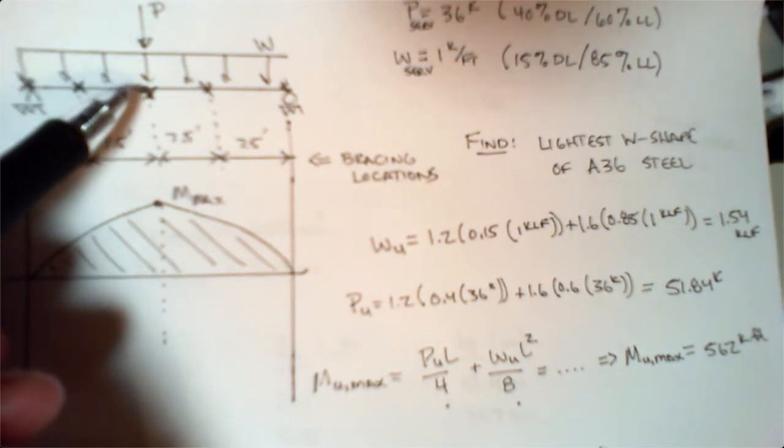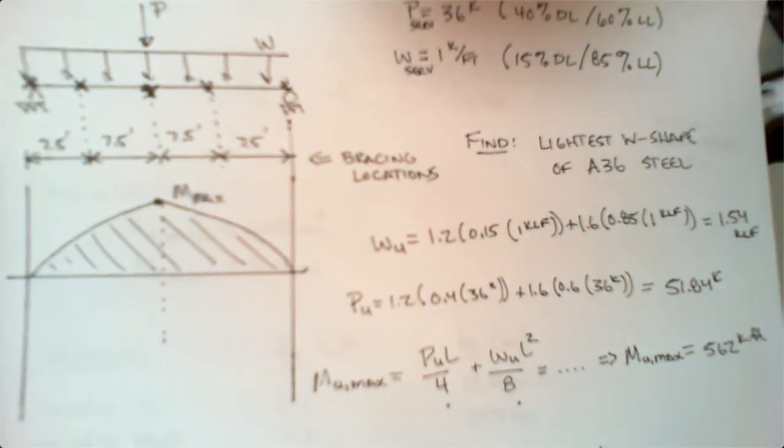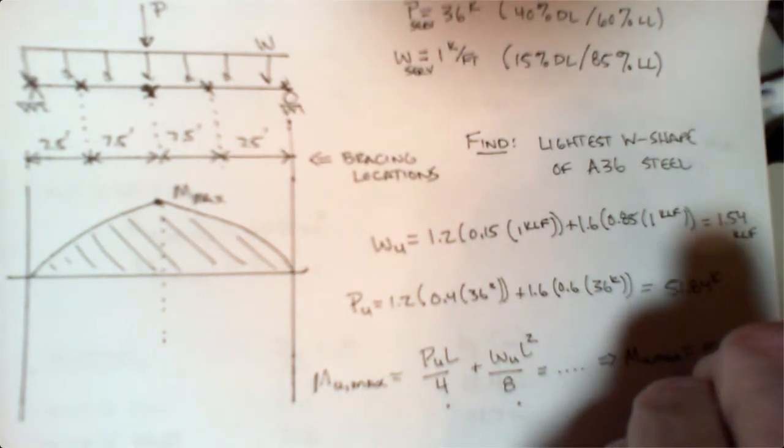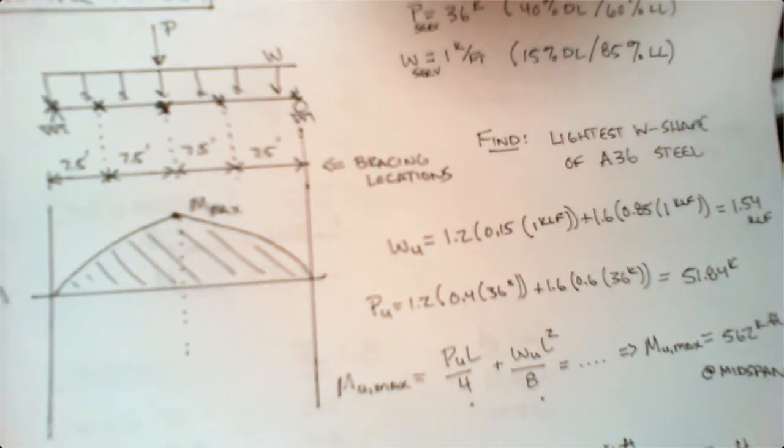I can do superposition on these. If this point load were off-center, we would have to be more careful, but I just want to get into how we determine the appropriate size. I'm taking the maximum from the point load and adding it to the maximum moment from the distributed load because they are at the same location, which happens to be mid-span.